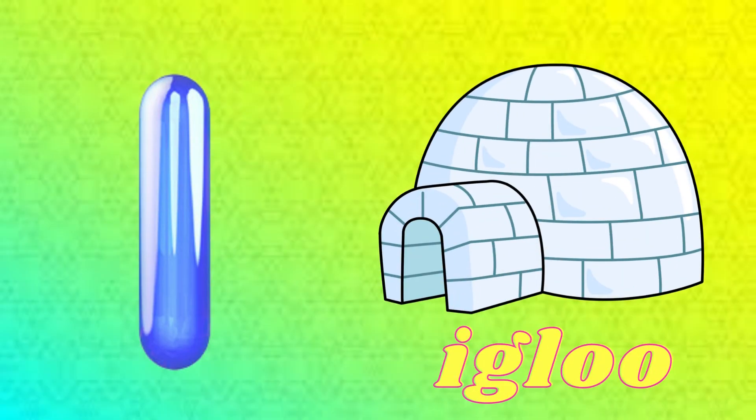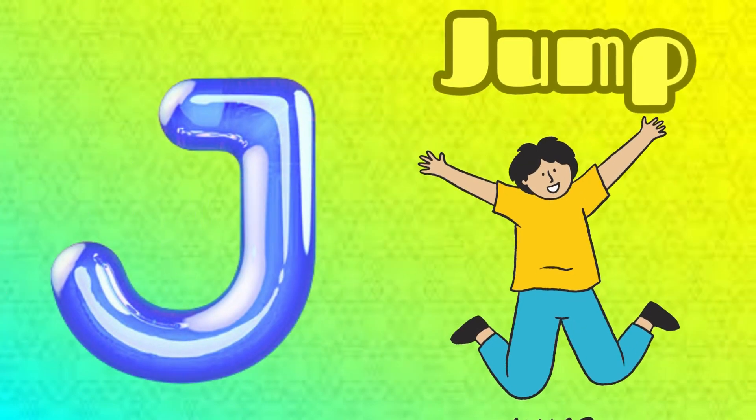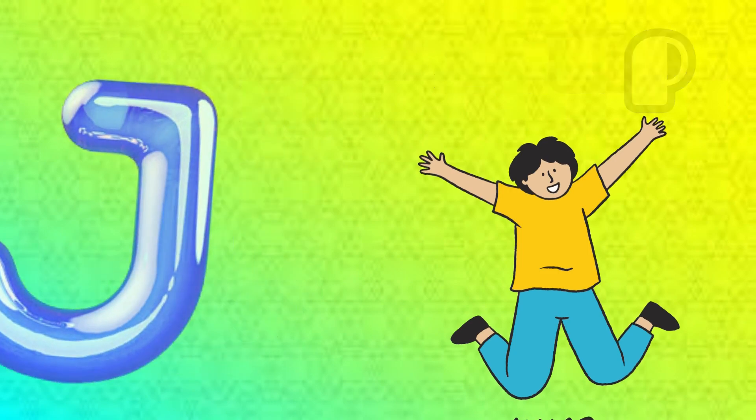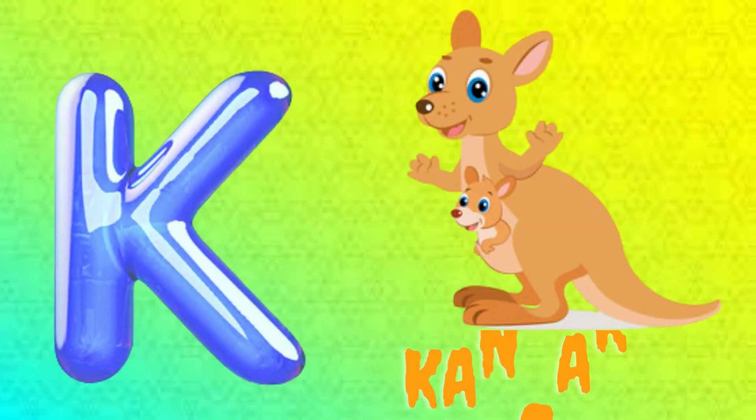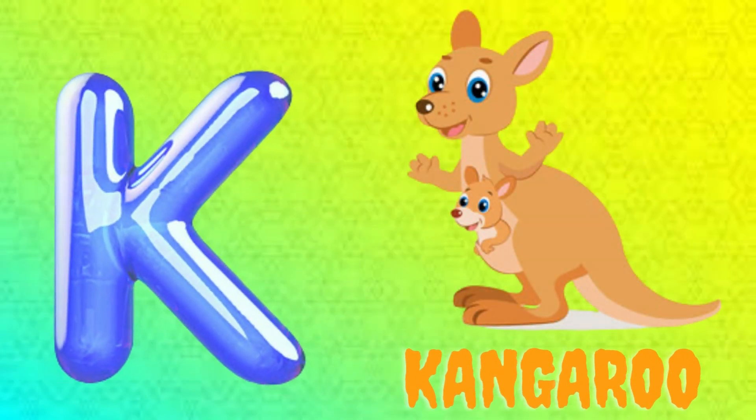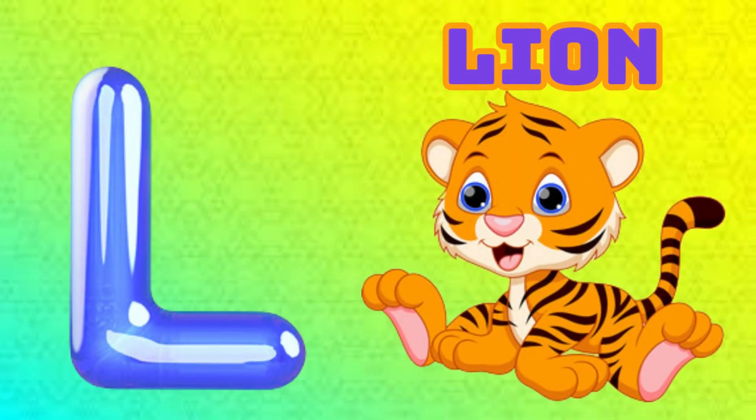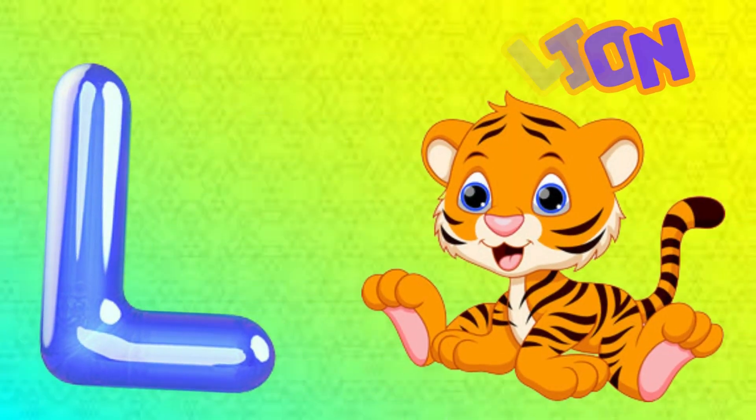I is for Igloo, I-I-Igloo. J is for Jump, J-J-Jump. K is for Kangaroo, K-K-Kangaroo. L is for Lion, L-L-Lion.